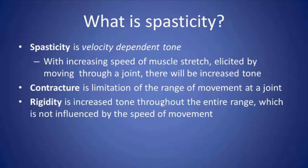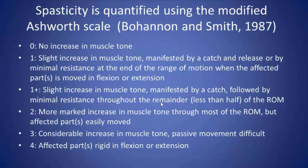Rigidity differs from spasticity in that it is increased tone throughout the entire range of movement, not influenced by speed. This is usually seen in GMFCS level 4 and 5 patients who have some degree of dystonia. Spasticity may be quantified using the modified Ashworth scale, which ranges from 0 — normal or no increase in muscle tone — to 4, where there is a major increase in tone throughout both flexion and extension of a joint.